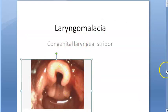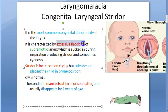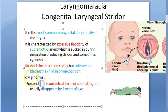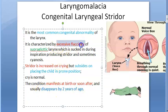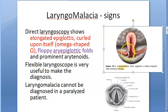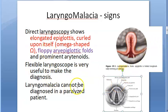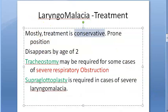Here you can see a photograph showing the omega-shaped epiglottis. To summarize: laryngomalacia is a congenital lesion and the most common congenital abnormality of the larynx. It is characterized by excessive flaccidity of the supraglottic larynx, which is sucked in during inspiration producing stridor and sometimes cyanosis. Stridor increases on crying but subsides in the prone position. The cry is normal. The condition manifests at birth and disappears by age two.